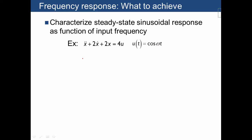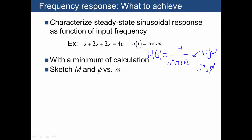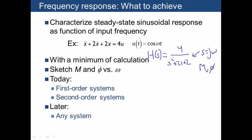Frequency response means finding the steady state response of a system to a sinusoidal input at some input frequency omega. We've already been working on this — for a given system, you would have a transfer function like 4 over s squared plus 2s plus 2, then plug in s equals j omega, and find the magnitude and phase. What we want to do next is find the same thing with a minimum of calculation, and be able to sketch m and phi very quickly as a function of omega. Today we'll look at how to do that for first and second order systems, and later examine any system.